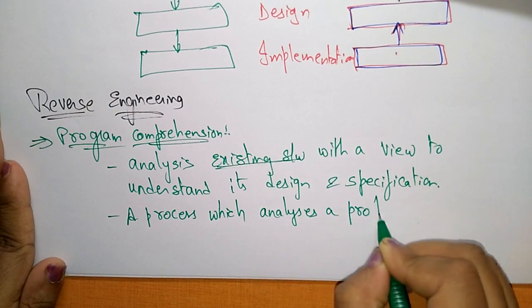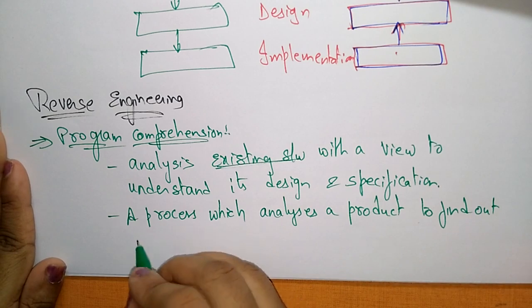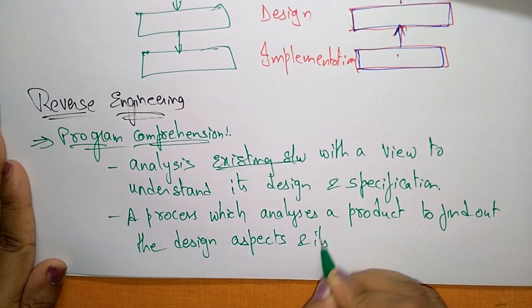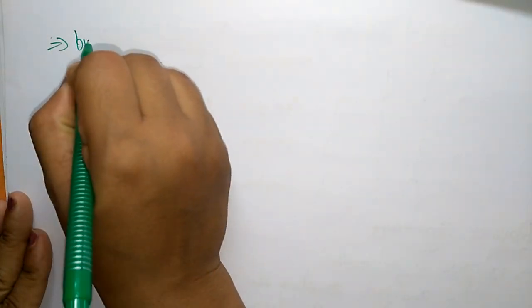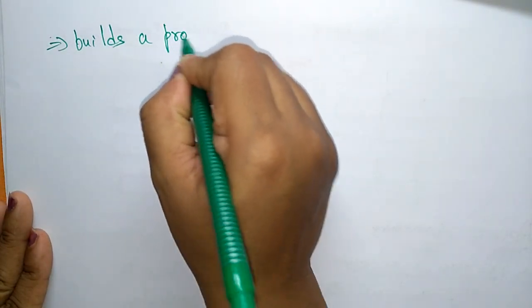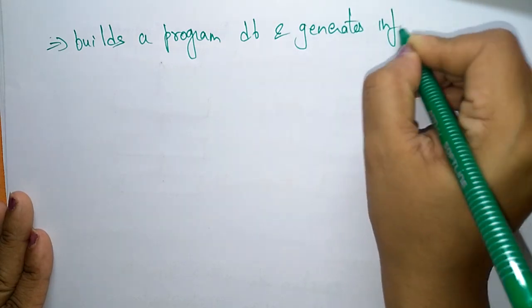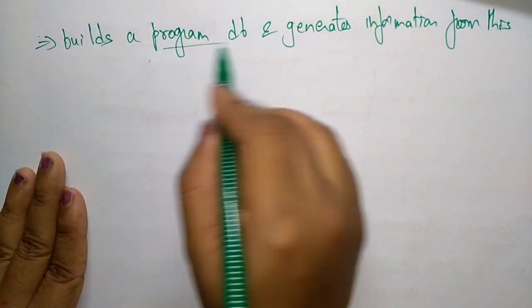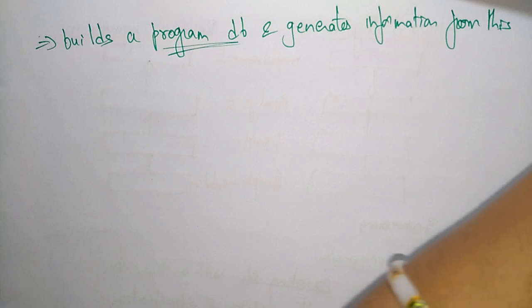Reverse engineering is a process which analyzes a product or a technology to find out its design aspects and functions. You follow reverse engineering when you need to discover the design aspects and functions of an existing product. It mainly builds a program database and generates information from that database.